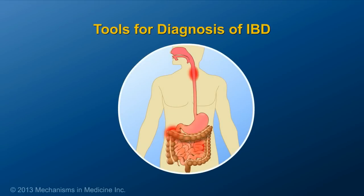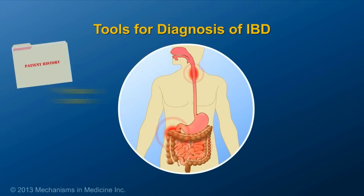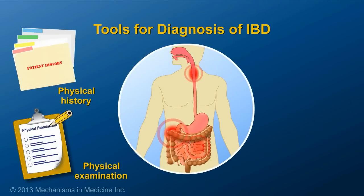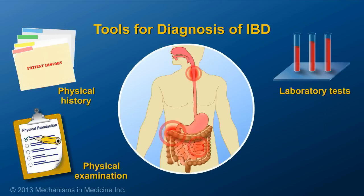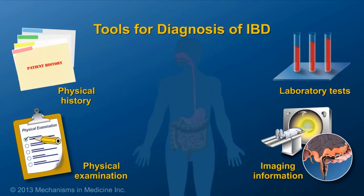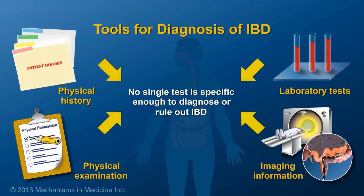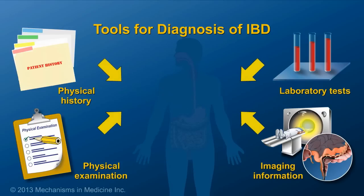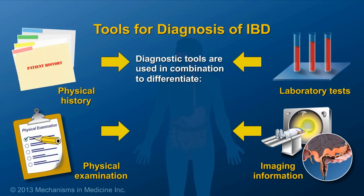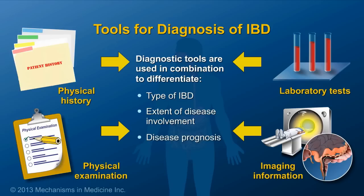Diagnosis of IBD is based on a combination of physical history and examination, laboratory tests, and imaging information. There is no single test that will diagnose or rule out IBD. Several tools are used in combination to differentiate not only the type of IBD, but also the extent of disease involvement and prognosis — that is, the prediction of the course and outcome of IBD.